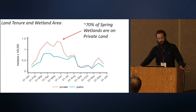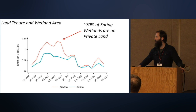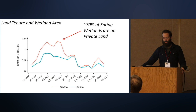Looking at land tenure underlying the wet area, most wet acres are largely driven by private land ownership — about 70 percent of spring wetlands are on private land, realized through flood irrigation agriculture. These are much more dynamic systems that drop off considerably in fall and early winter. Whereas public lands — largely federal and state wildlife refuges — are more consistent through time and make up a larger portion of the conservation portfolio during fall.